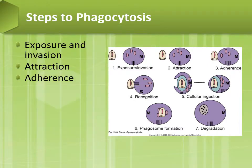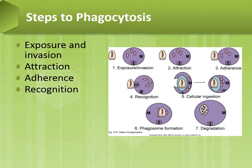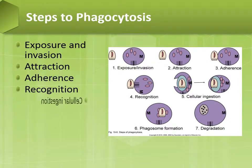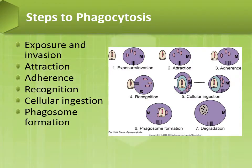Adherence is important because phagocytosis requires that the phagocytic cell first bind to the surface of the target. Recognition occurs when the phagocytic cell sticks to the surface of the target cell and recognizes it as a non-self cell, which leads to cellular ingestion, then phagosome formation, and ending with degradation.